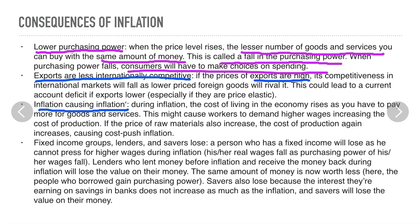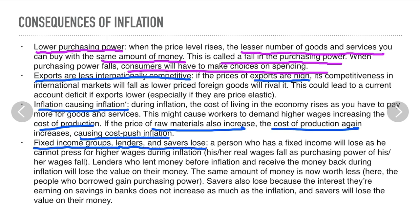Inflation can also cause further inflation: the rising cost of living may cause workers to demand higher wages, increasing the cost of production, and rising raw material prices further push up costs, causing cost-push inflation. Fixed income groups, lenders, and savers lose out: a person on a fixed income cannot press for higher wages, so their bargaining power falls. Lenders who lent money before inflation receive back money of lower real value. Savers also lose because the real value of their savings and interest earnings falls.